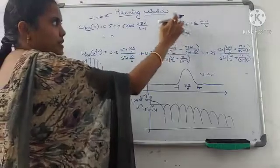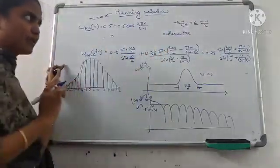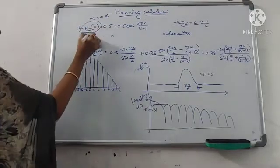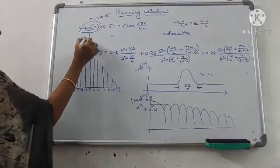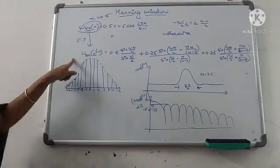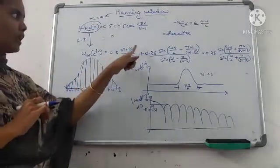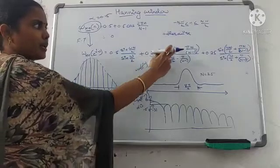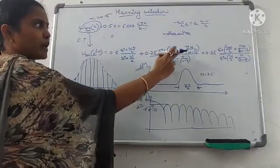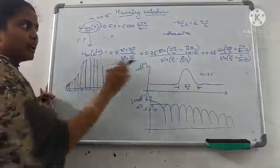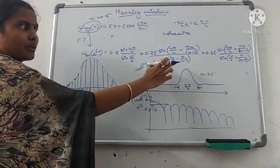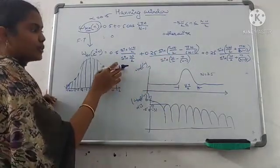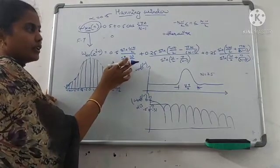The limits are minus (N−1)/2 to (N−1)/2. If you find the Fourier transform of the Hanning window, you can get: 0.5 · sin(ωN/2) / sin(ω) plus 0.25 · sin(ωN/2 − φN/(N−1)) / sin(ω/2 − φ/(N−1)).